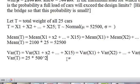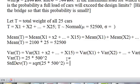The standard deviation is the square root of that, 25 times 500 squared, which is 5 times 500, which is 2500. So now I know the total weight, its distribution, its mean, its standard deviation.